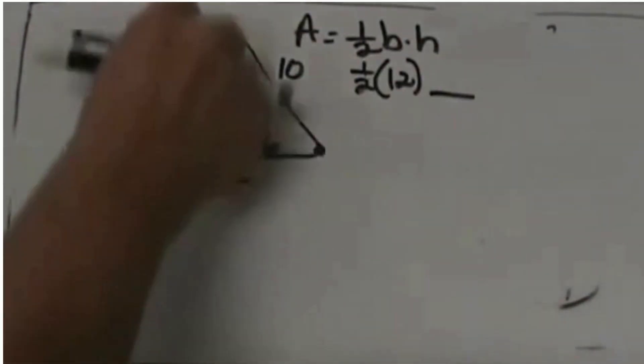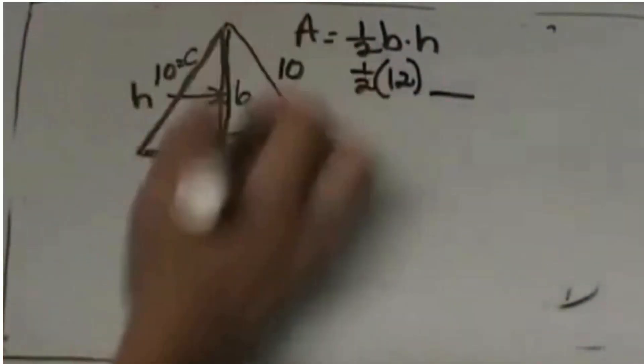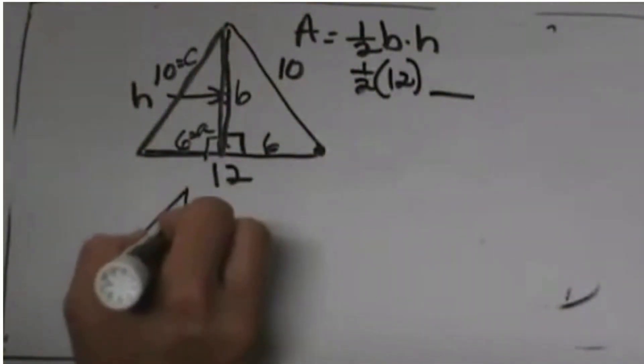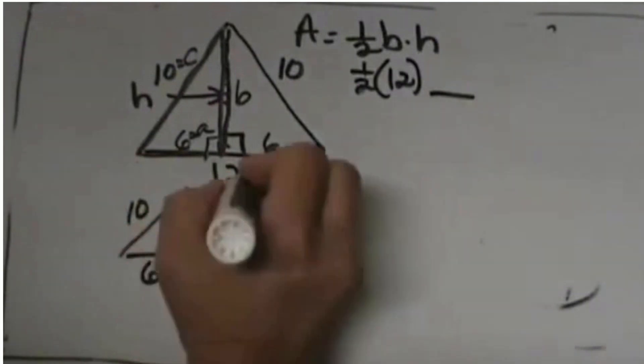Now I am going to use the Pythagorean Theorem to find this altitude. You can even redraw this on the outside if it helps. This is 6, this is 10, and this is our unknown b.